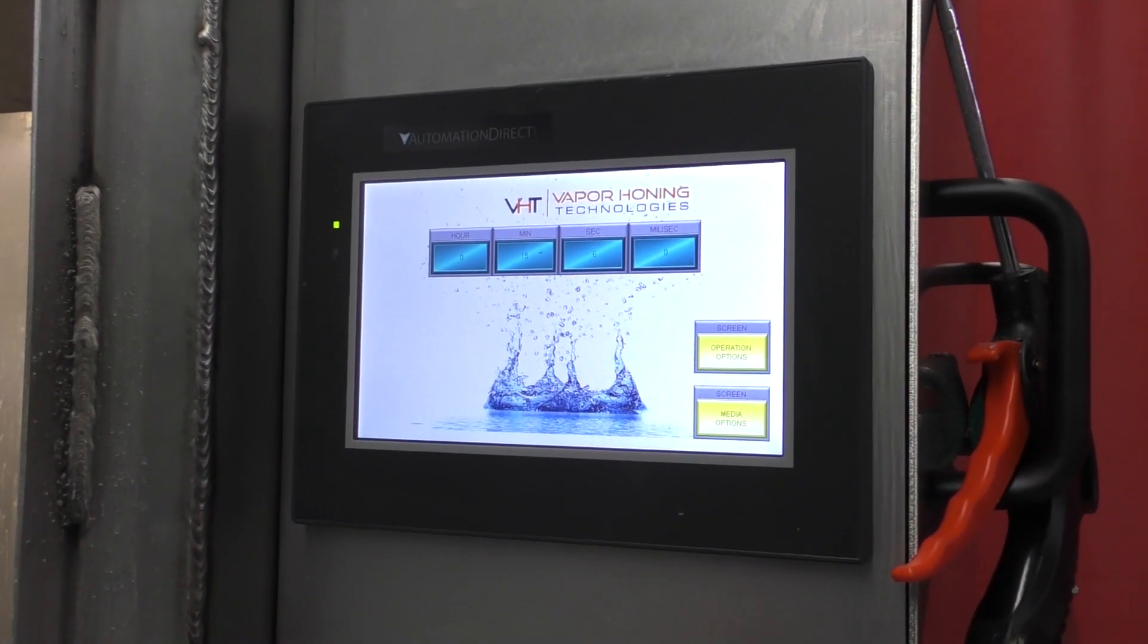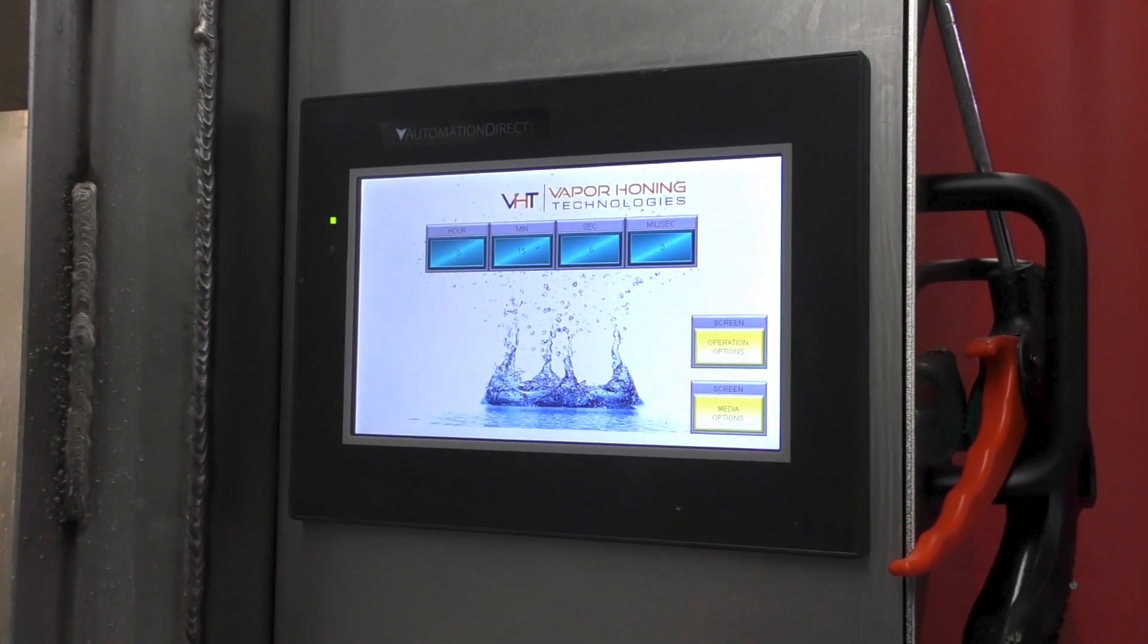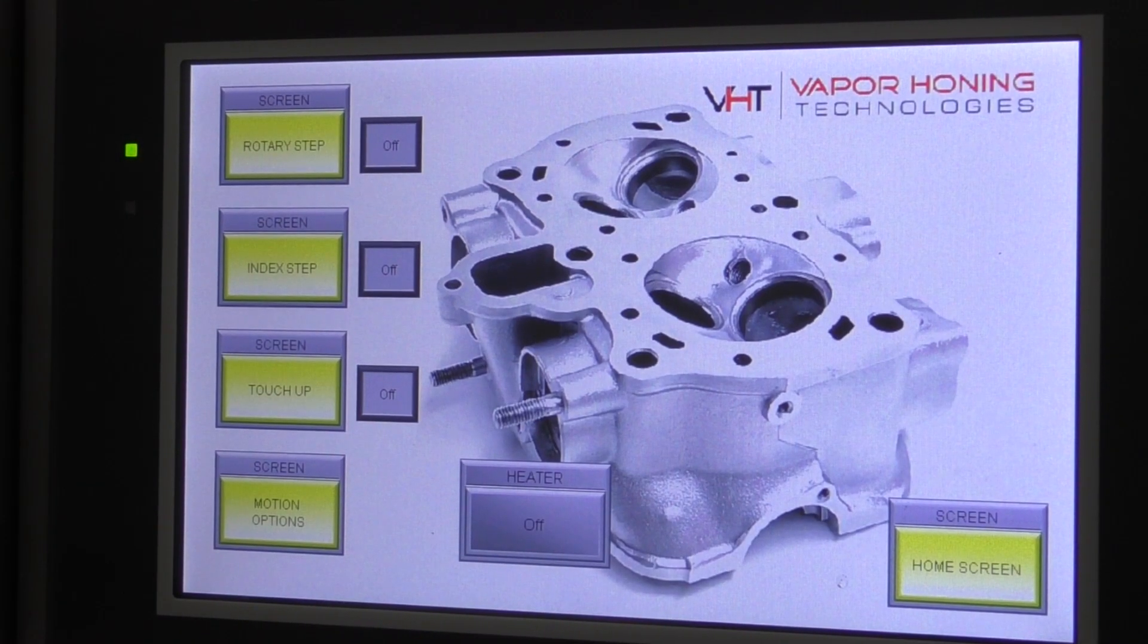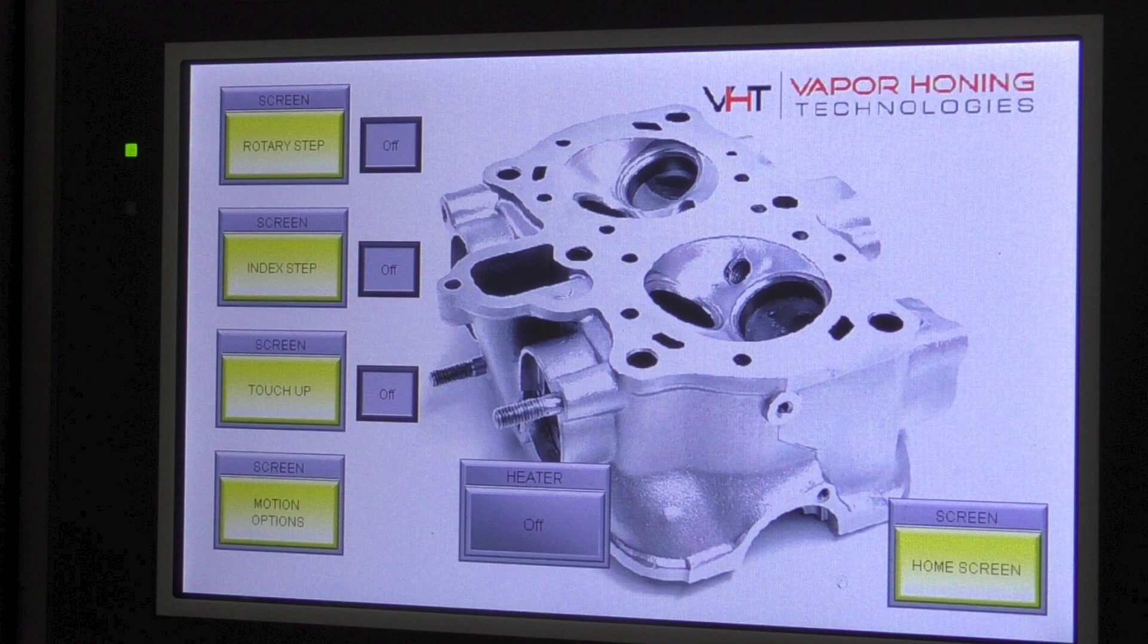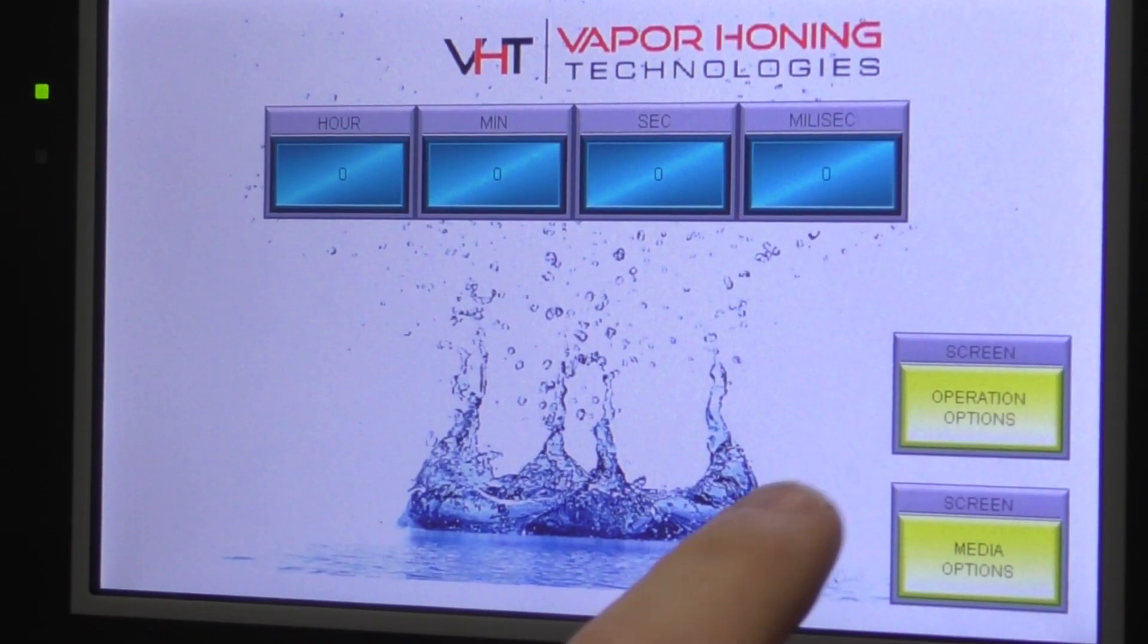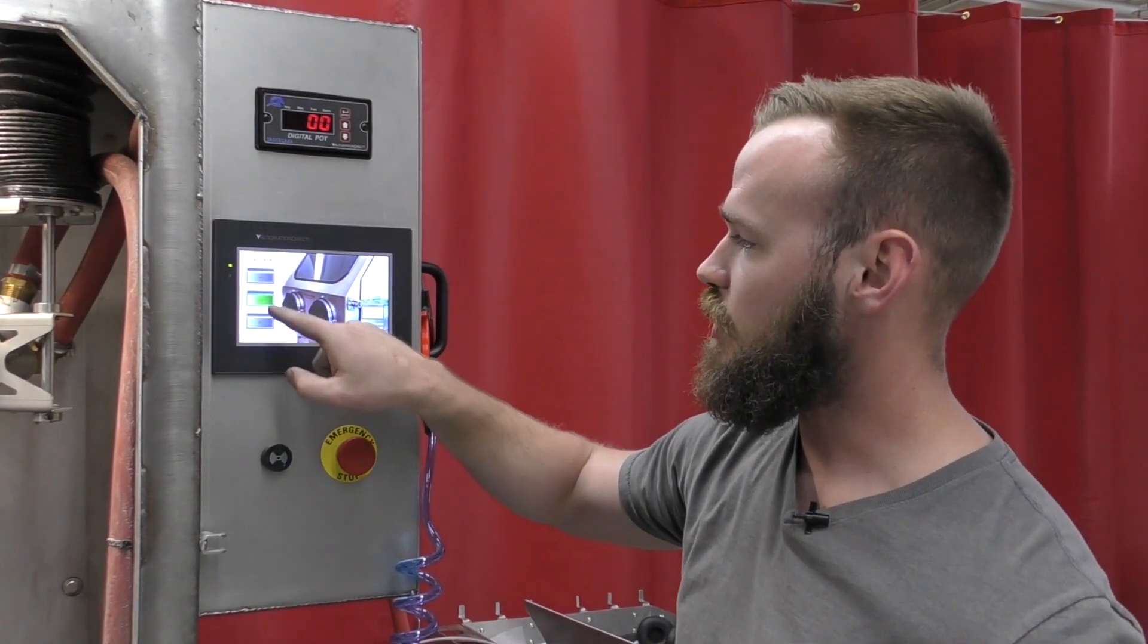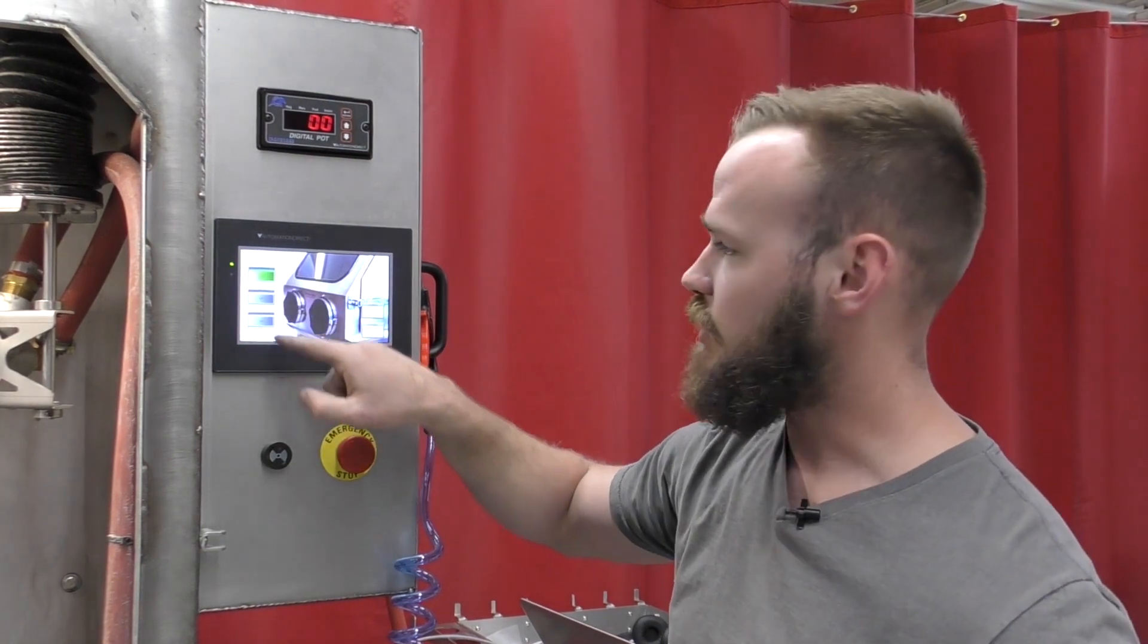Also, we have a seven inch HMI display where it will show the time it takes to do a job. You have an operation options page which has your blast options as far as Z axis motion. And then you also have media options. So you can choose between different medias that will time your pinch valve to certain times.